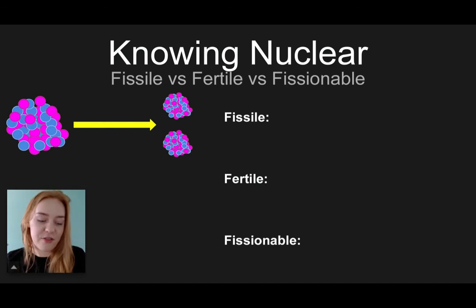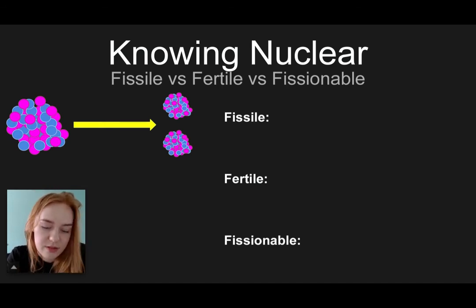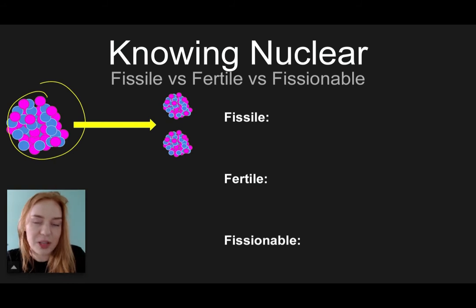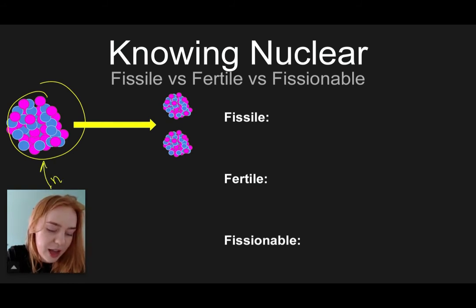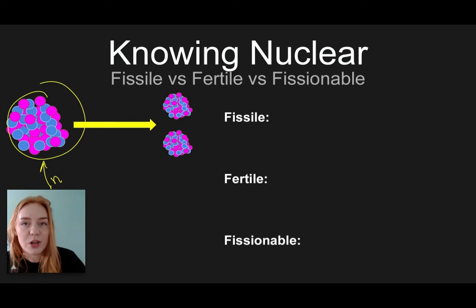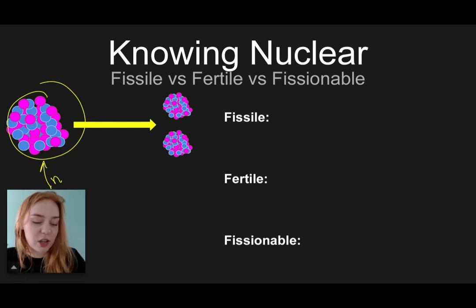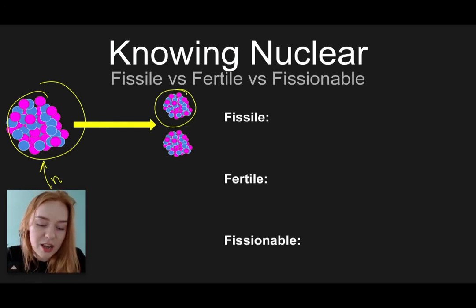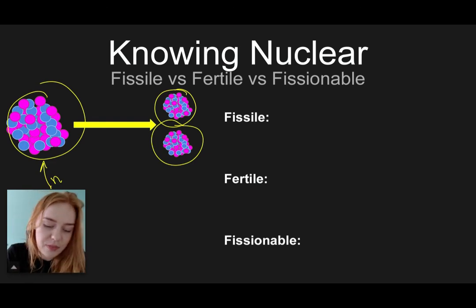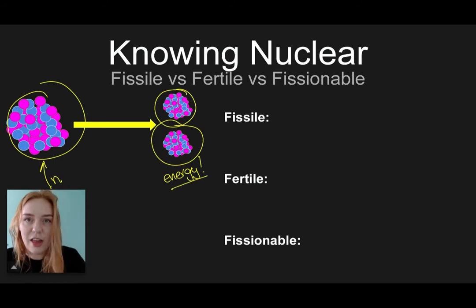But first, let's take a look at this simplified diagram of fission. Over here we have our large nucleus, and it's going to be hit by a neutron. The neutron will be absorbed by the nucleus along with its energy, and this absorption or capture is going to cause the bonds of the large nucleus to break and it's going to split apart — fissioning into two smaller nuclei as well as energy.